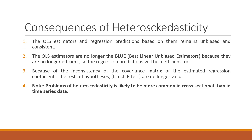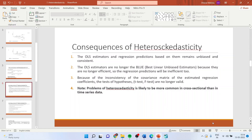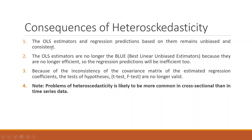Let us see what the consequences are. The OLS estimators and the regression predictions based on them remain unbiased and consistent. However, the OLS estimators are no longer BLUE — Best Linear Unbiased Estimators — because they are no longer efficient, and therefore the regression predictions will be inefficient too. Because of the inconsistency of the covariance matrix of the estimated regression coefficients, the test of hypothesis — the T-test and F-test — are no longer valid.